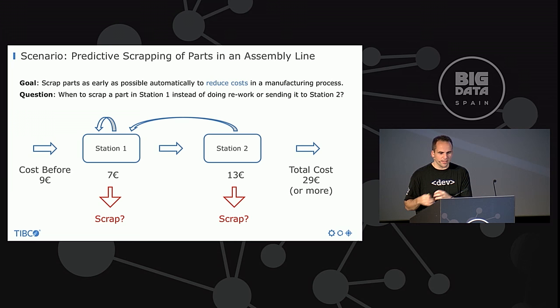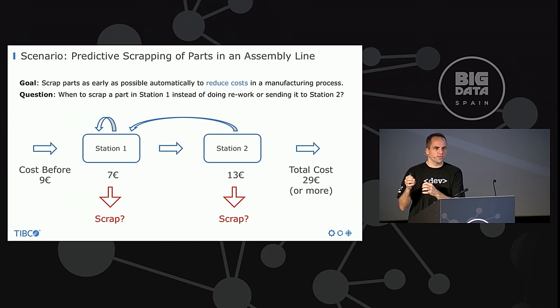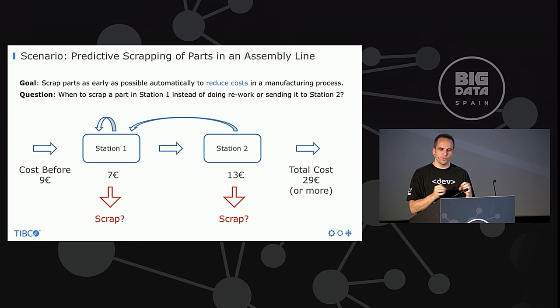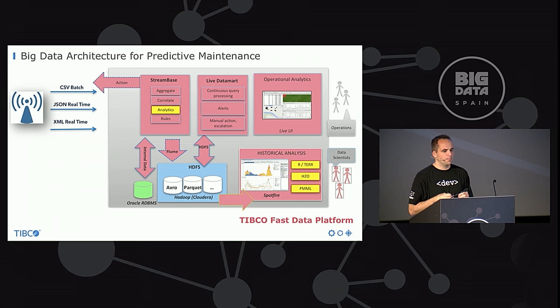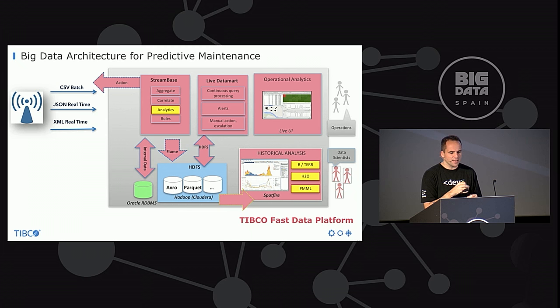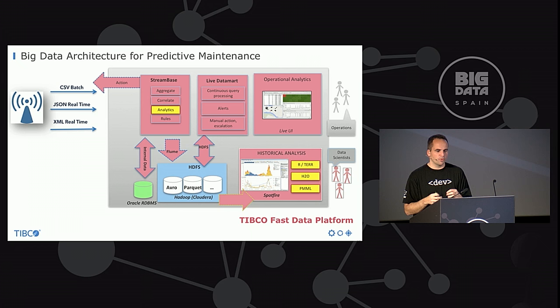Let's take a look at the live demo using the same manufacturing use case — scrapping parts in an assembly line. Station one and station two both have costs per part, sometimes requiring rework at station one. The use case was to use streaming analytics to decide when to scrap parts as early as possible to reduce costs. Because the data was very complex, stored in Hadoop with different data sources and structures, we analyzed it with our visual analytics tool. Due to the complexity, we needed a data scientist to build an analytic model — the business user alone could not find the insights — and the model helped decide when to scrap a part as early as possible.